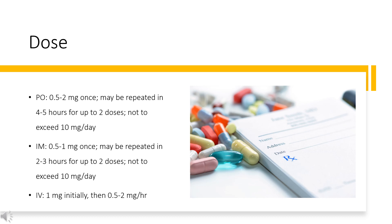IM: 0.5–1 mg once, may be repeated in 2–3 hours for up to 2 doses, not to exceed 10 mg per day. IV: 1 mg initially, then 0.5–2 mg per hour. Hypertension (off-label): 4 mg loading dose, then 0.5–2 mg per day orally, divided every 12 hours.